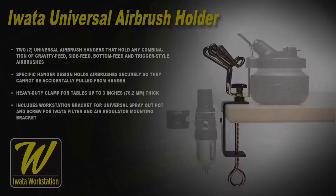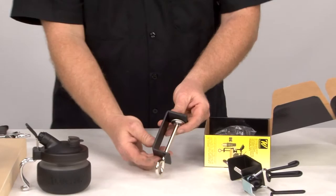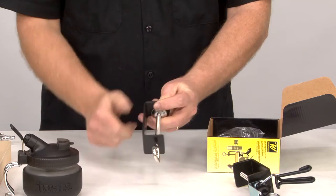For our second breakdown, we have the universal airbrush holder. It doesn't come all pretty and assembled like this. It comes in a box - look for that workstation logo on the side. First thing we pull out is the bracket itself. It's deep, so it fits just about any table, and that sucker is solid metal, not plastic.